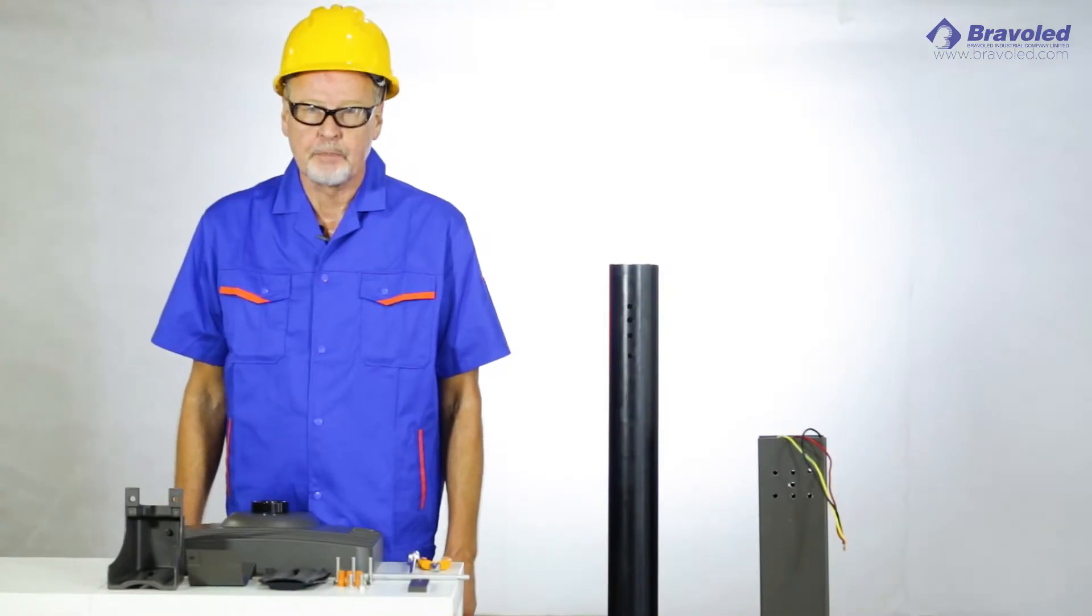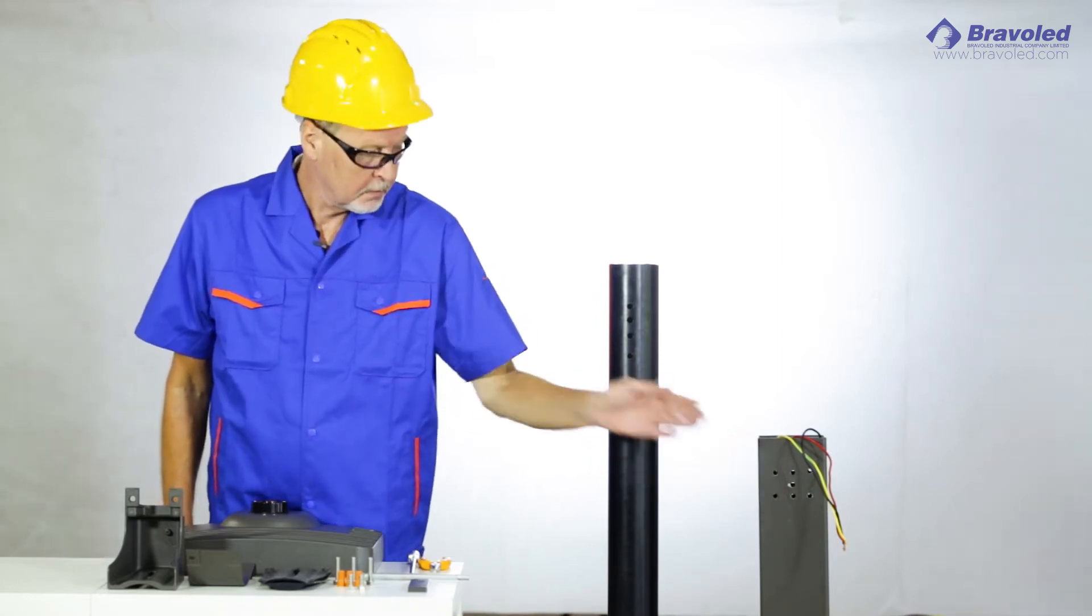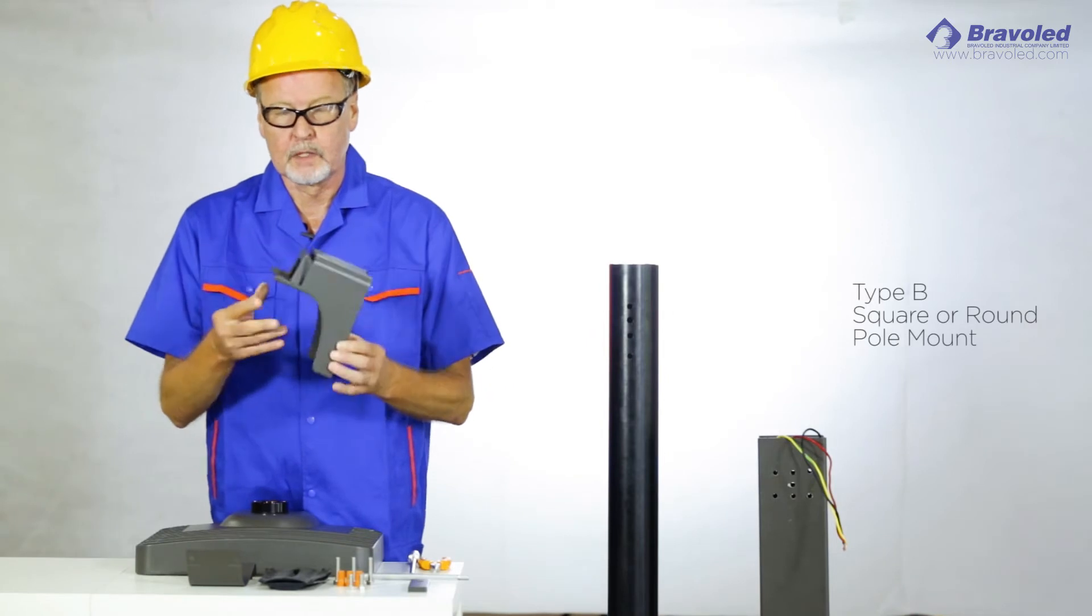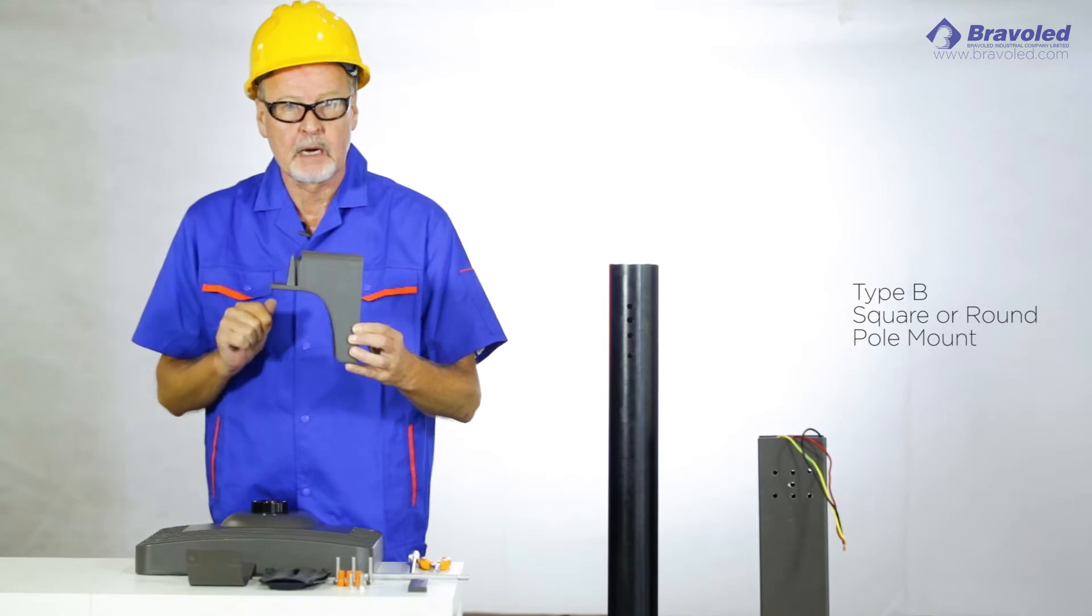And this is our type B installation. Type B is for either a flush mount or a pole mount. So we start with a 90 degree bracket. Also the same dynamic, unique modular mounting system.